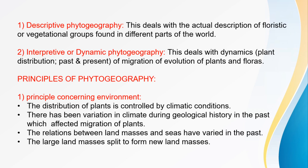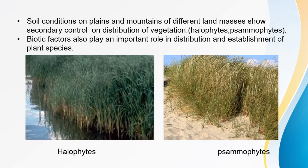The relation between land masses and seas has varied in the past. Large land masses split to form new land masses. The soil conditions on the plains and mountains of different land masses show secondary control on the distribution of vegetation.